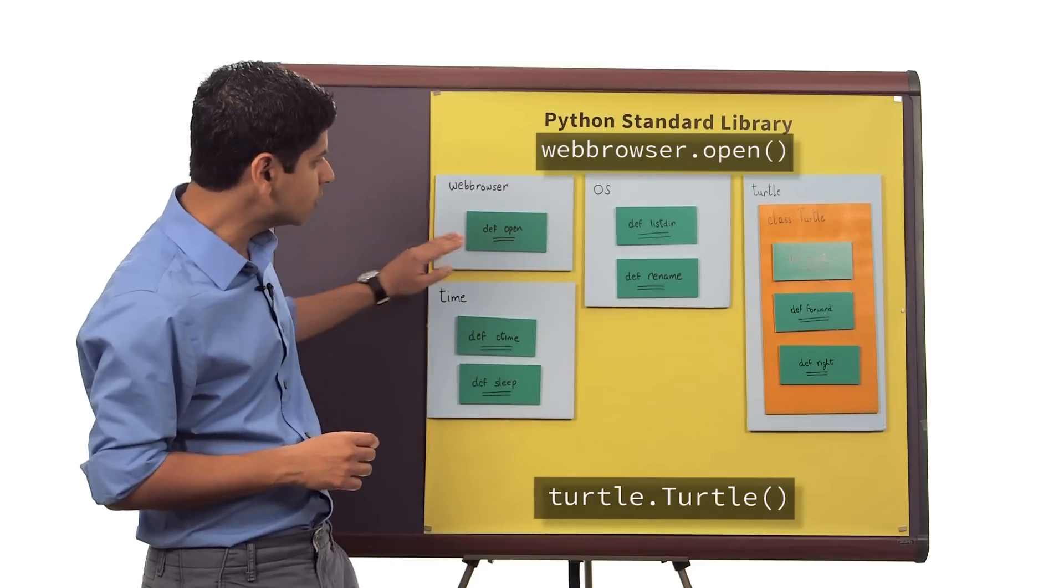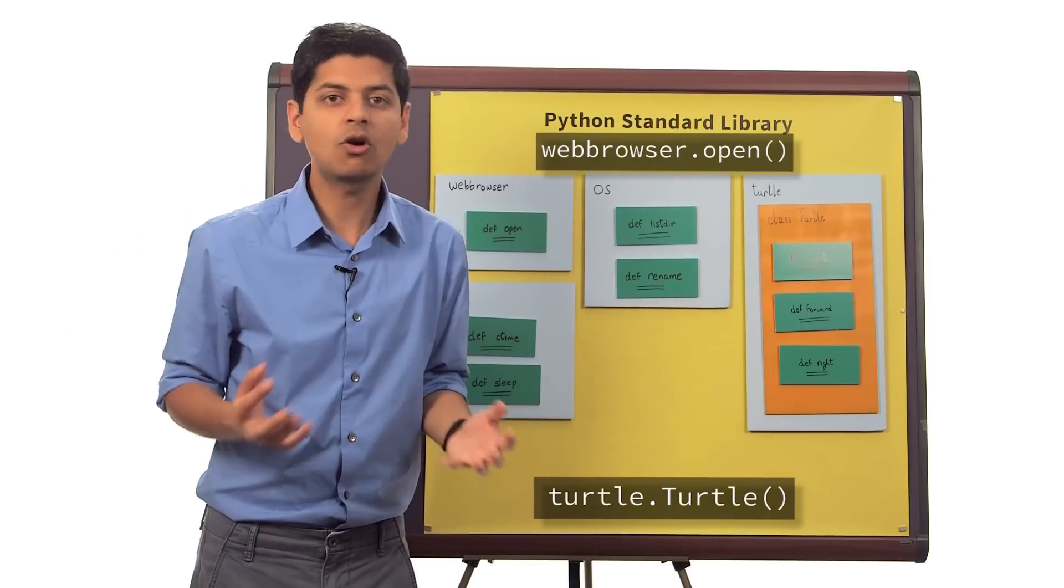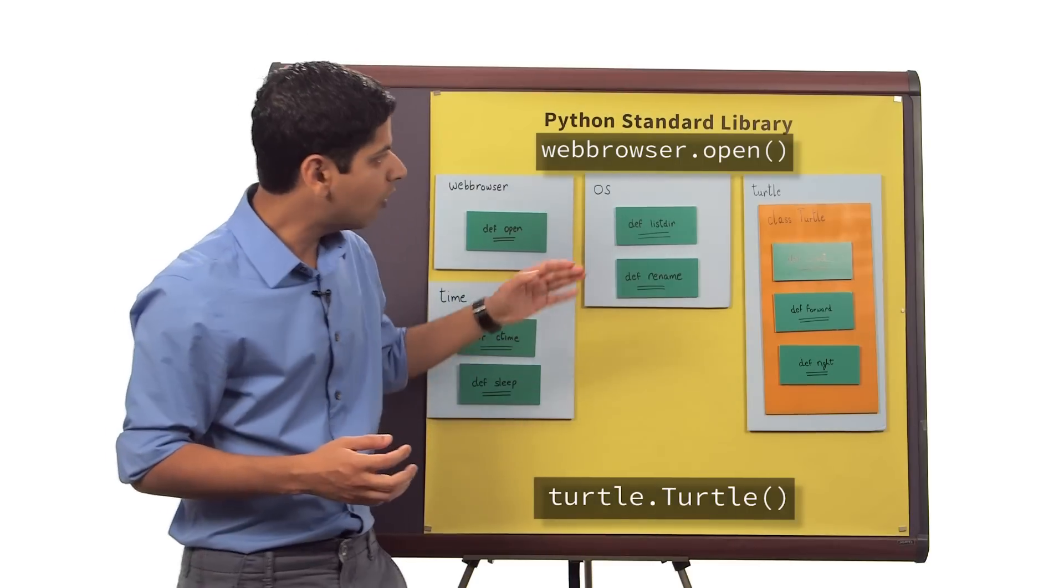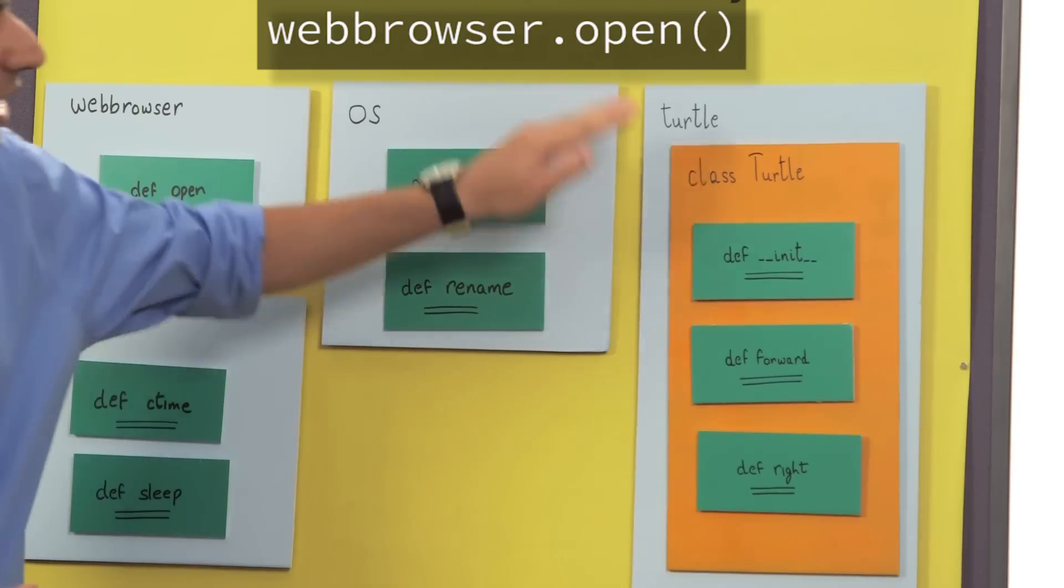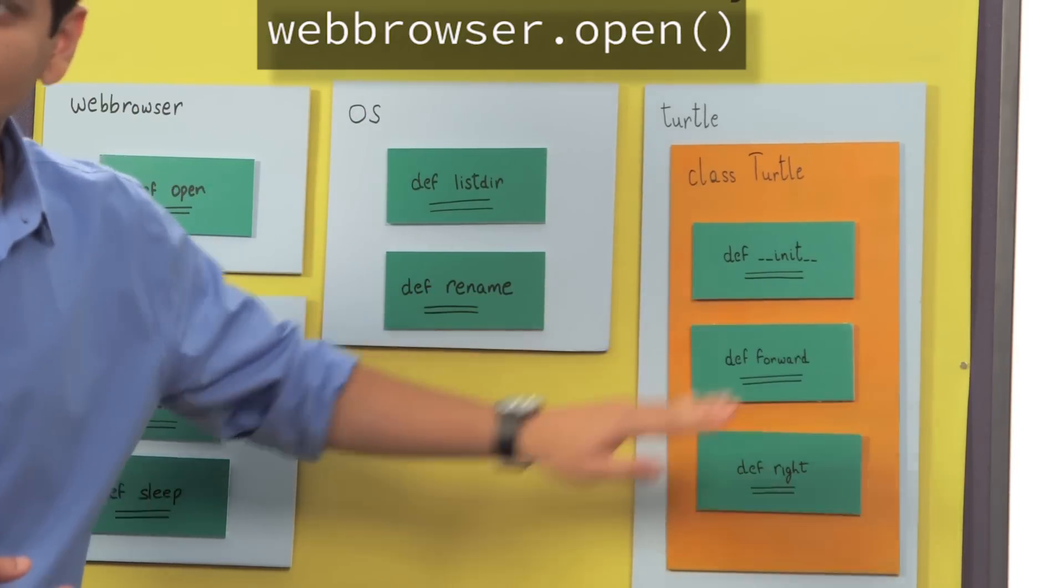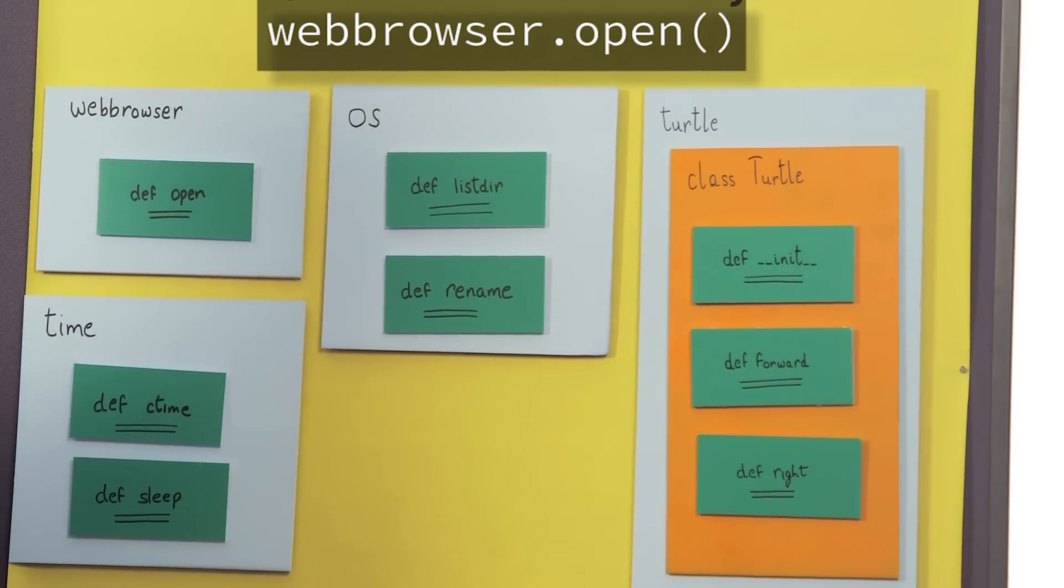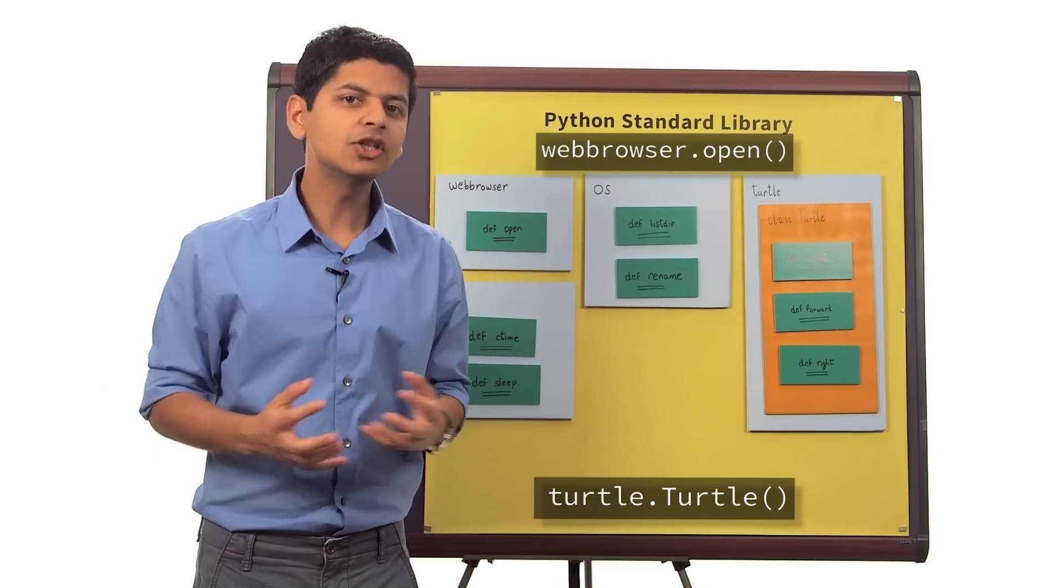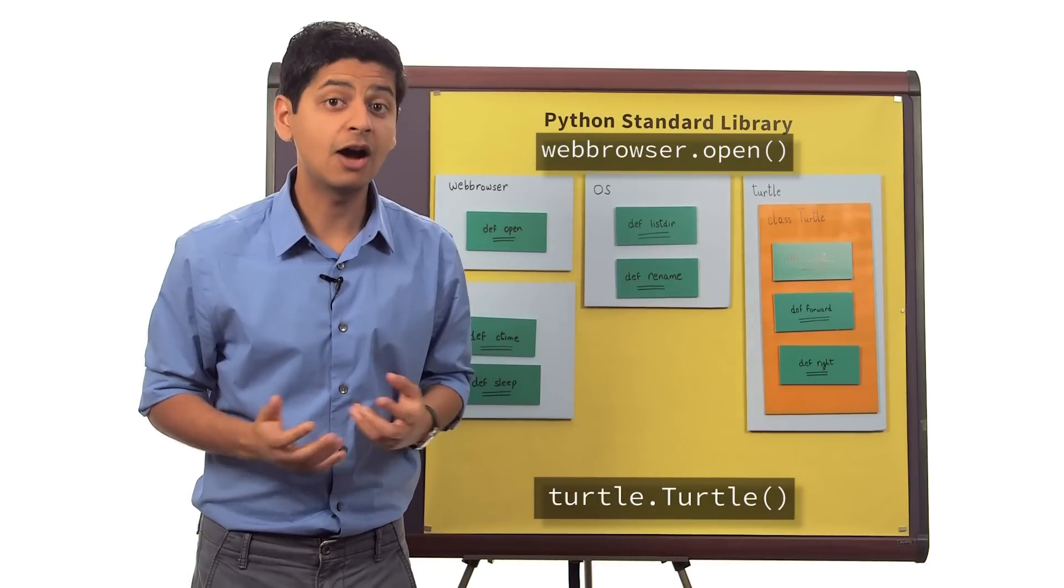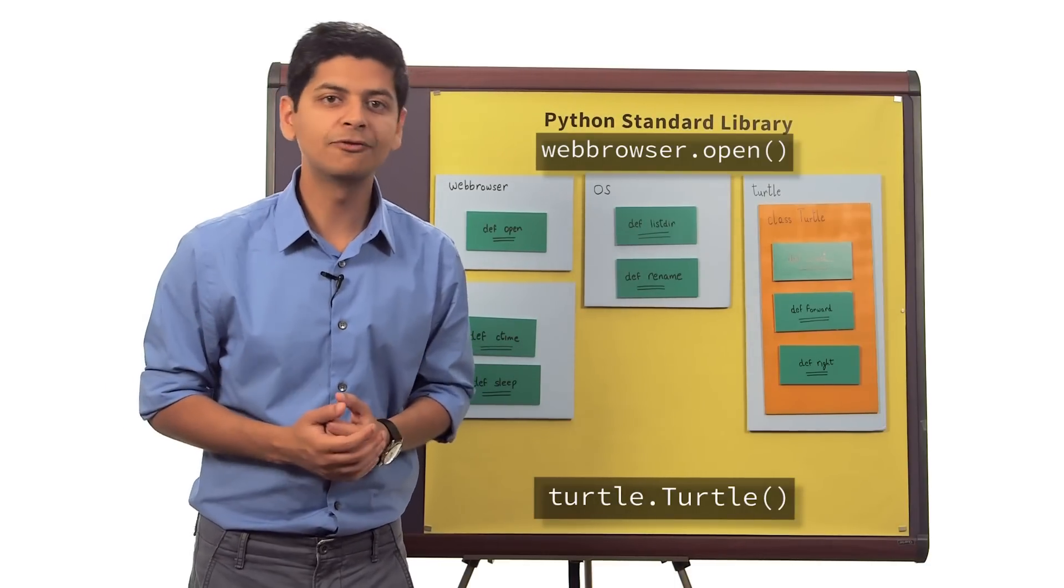When we called webbrowser.open, all we did was call a function. But when we called turtle.turtle, it in turn called the init function, which created or initialized space in memory that did not exist before. So that concludes our first example of how to use classes. Let's look at a few more examples.